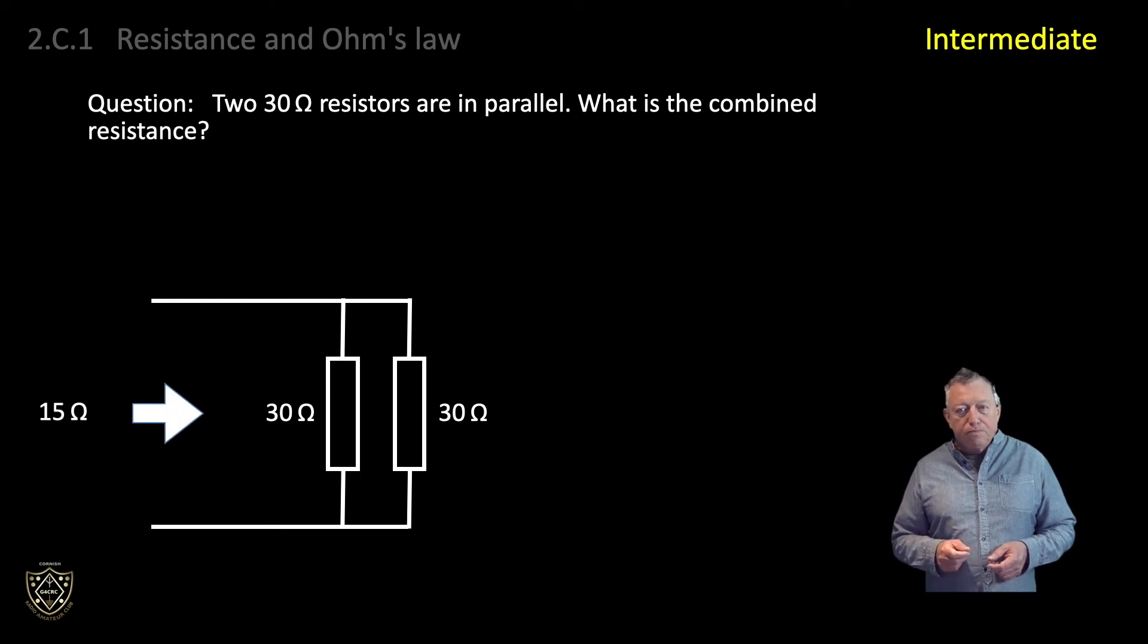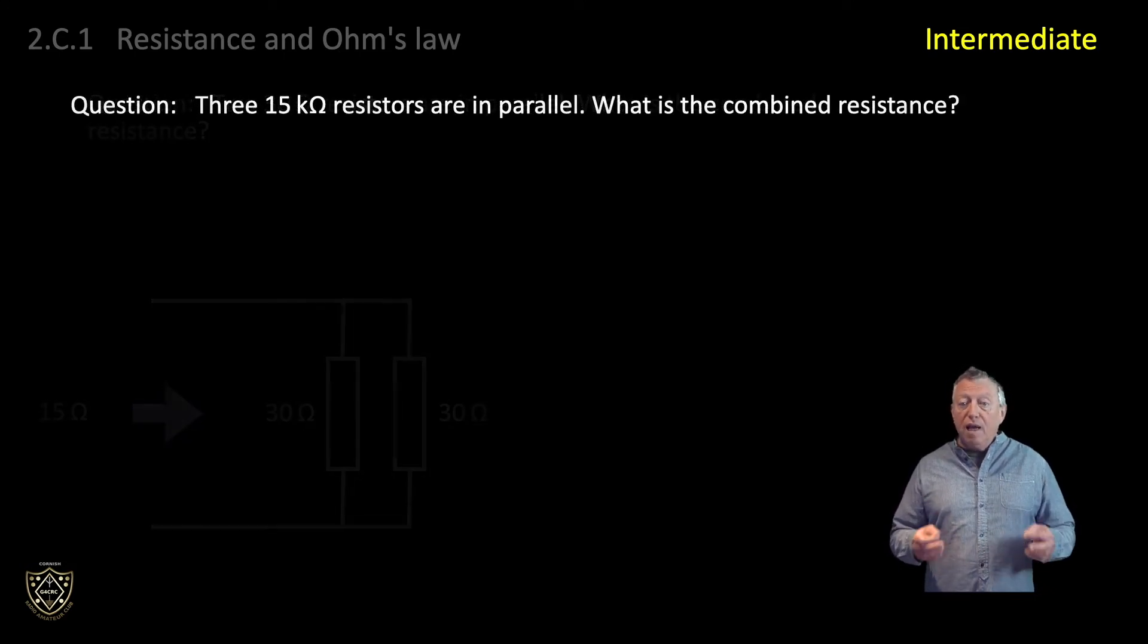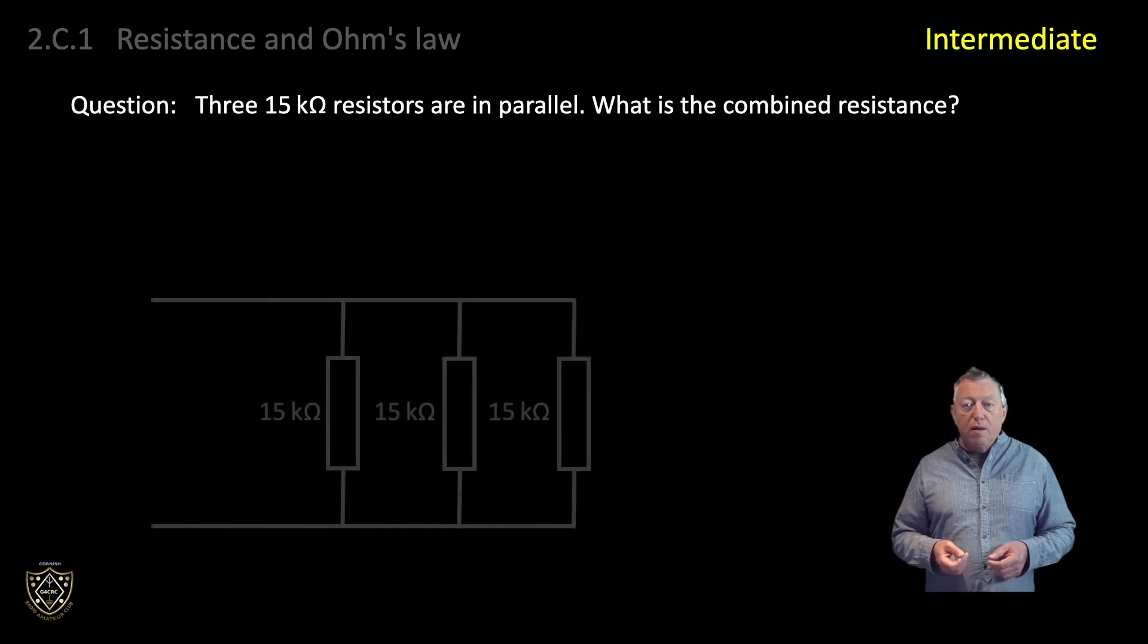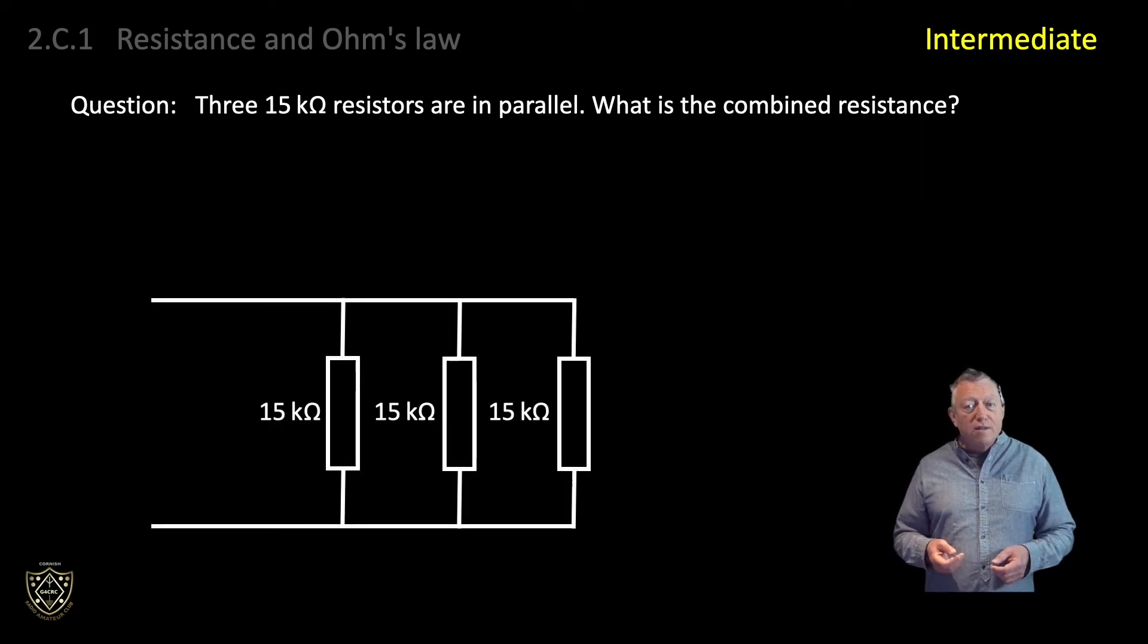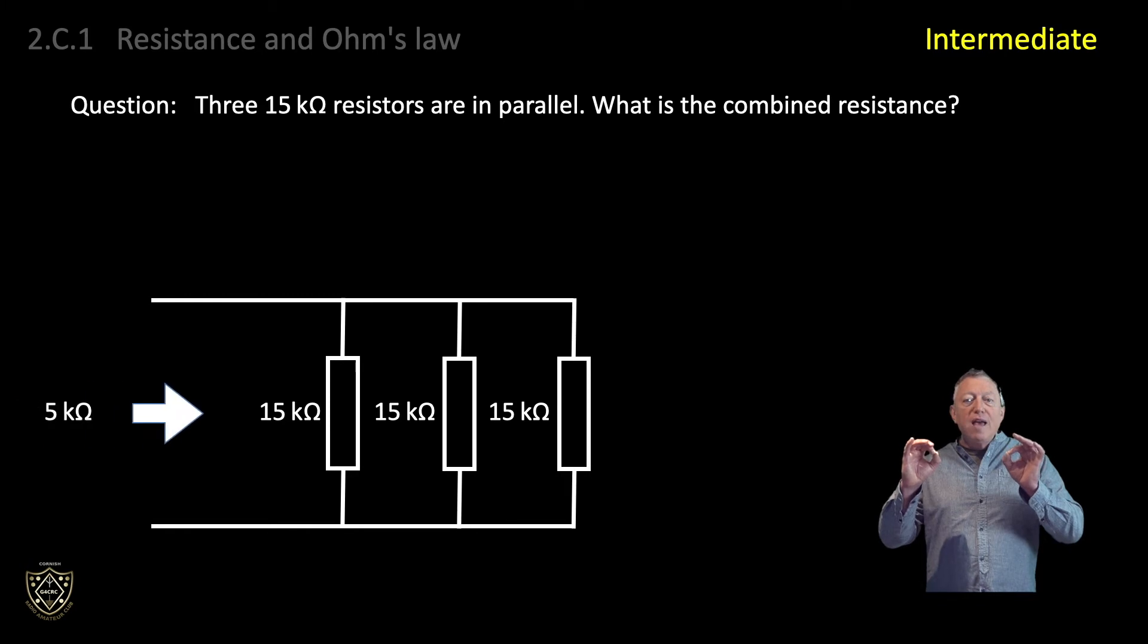Next question. Three 15 kilo ohm resistors are in parallel. What is the combined resistance? Again, if the electrons have three equal pipes to flow through, the resistance to their passage is only a third of what one pipe would present. So, the answer is 5 kilo ohms.